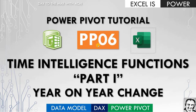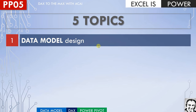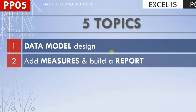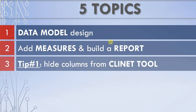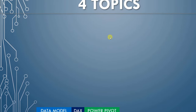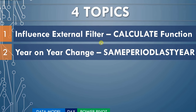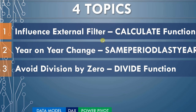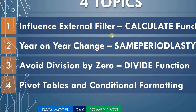Hello and welcome to Power Pivot tutorial video number six, or PP06. In this video we are going to look at the time intelligence functions. In the previous video PP05 we discussed five topics: data model design, how to add a measure and build a report, and three critical tips — how to hide columns from client tools, how to sort by a column, and how to update a calendar. In this video PP06 we are going to discuss four topics: how to influence external filters using the CALCULATE function, how to calculate the year-on-year change using the SAMEPERIODLASTYEAR function, how to avoid division by zero using the DIVIDE function, and finally how to produce a report in a pivot table and use conditional formatting to highlight insights.